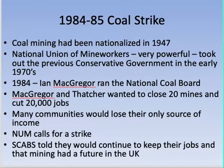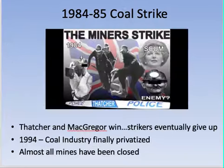Ian McGregor ran the coal board, and he and Thatcher wanted to close 20 mines and cut 20,000 jobs, going against the National Union of Mineworkers. Many communities would lose their source of income, making this a major political battle. The union called for a strike. Replacement workers (scabs) took over, and the strike ultimately ended in a win for Thatcher and McGregor — the strikers gave up.